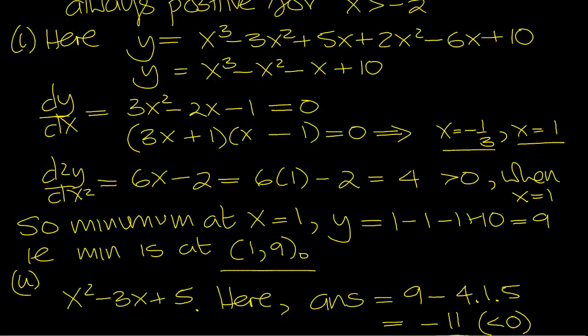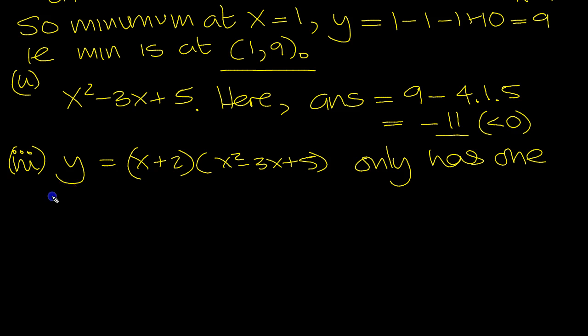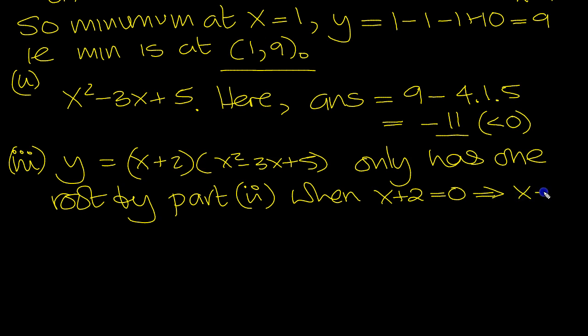Explain why this is always positive. So part 3, y is equal to (x + 2)(x squared minus 3x plus 5) only has one root by part 2. When x plus 2 is equal to 0, which tells us x is equal to minus 2. So that's the only root.